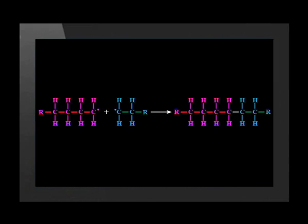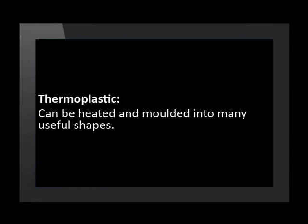This is called termination. After this, the chain no longer grows. Polyethene, or polyethylene as it is sometimes called, is a very useful polymer. It is a thermoplastic. This means that it can be heated and molded into many useful shapes.